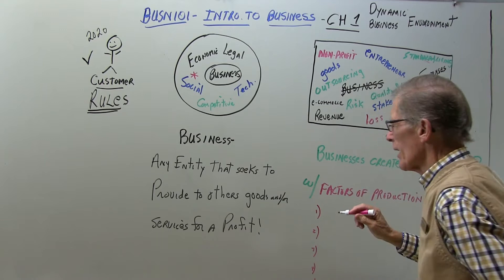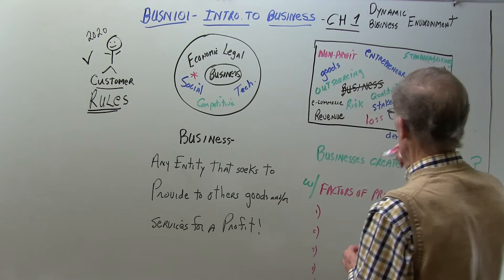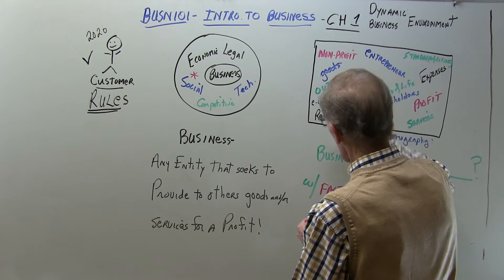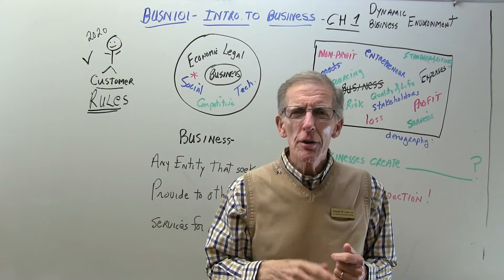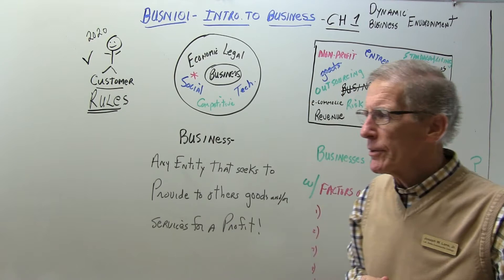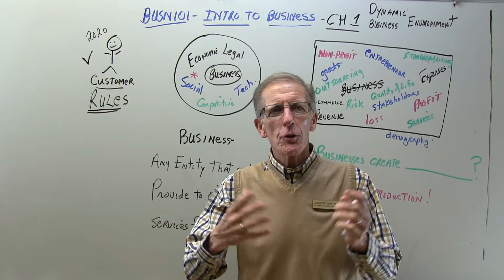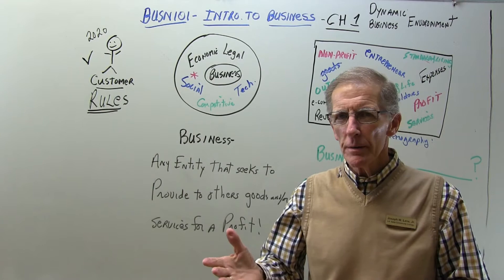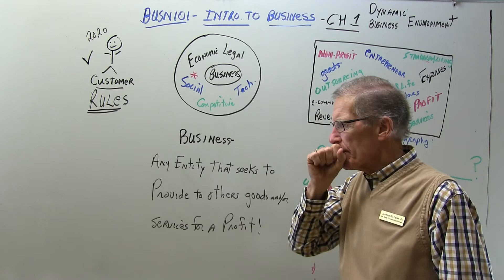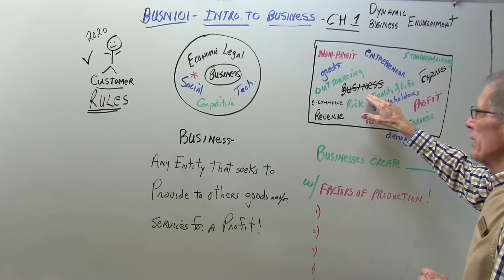We used the words 'goods' and 'services' in that definition. Let's take the word goods first. What are goods? Name some goods — glasses, vehicles. How many goods do businesses produce? Kazillions — lots and lots of goods. Goods are tangible things: you can touch them, feel them, wear them, eat them. Businesses produce goods, and now we know what goods are.